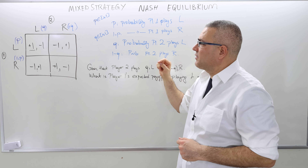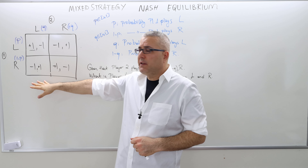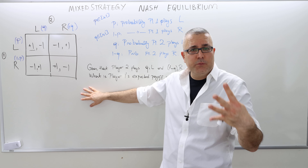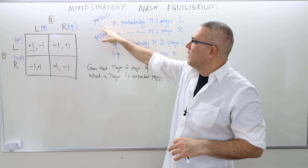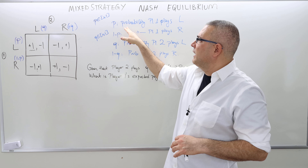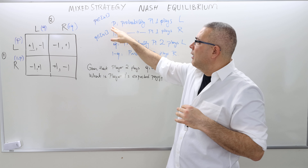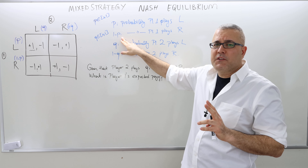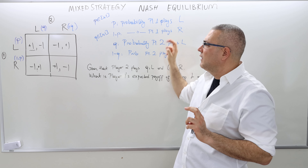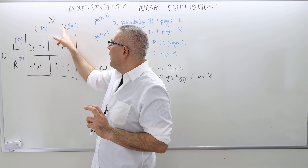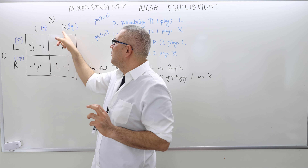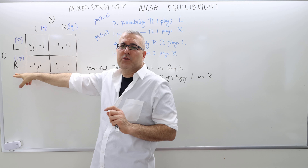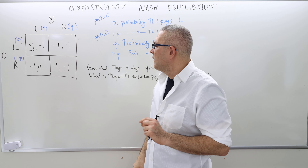This is the second part of our mixed strategy Nash equilibrium. We have the matching pennies game — there's no pure strategy Nash equilibrium, so we extended the set of strategies to mixed strategies. Player one plays left with probability p, and therefore one minus p is the probability that player one plays right. Q is the probability that player two plays left, and one minus q is the probability player two plays right. I've already put those notations on the matrix representation.